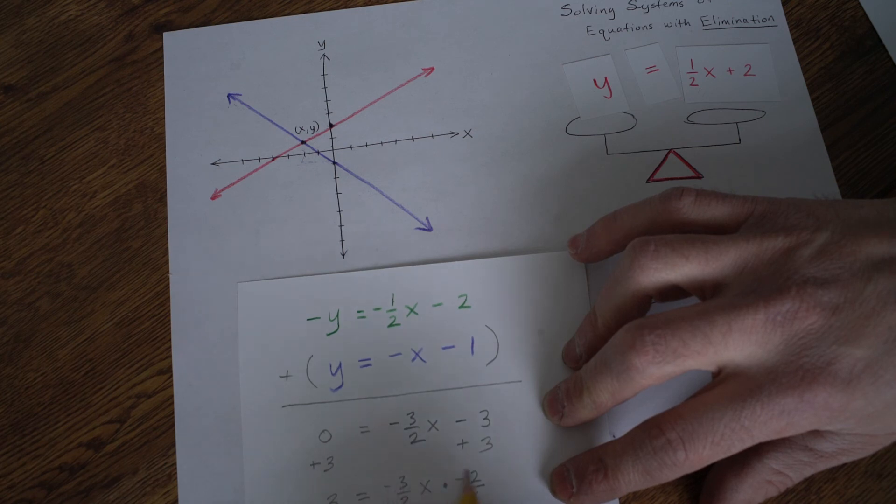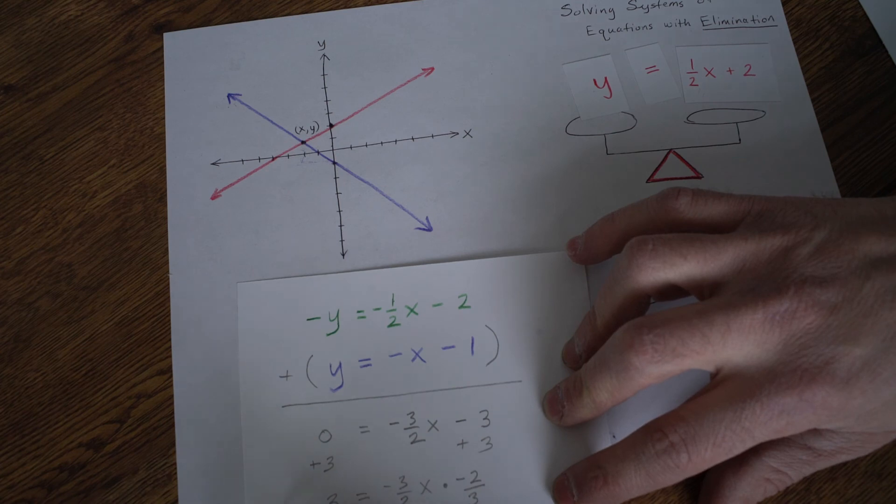It's positive 6. Negative 3 times negative 2 is positive 6. The negatives cancel over 6. And that's just a 1. So multiplying by negative 2 thirds on both sides gives us a 1x over here.